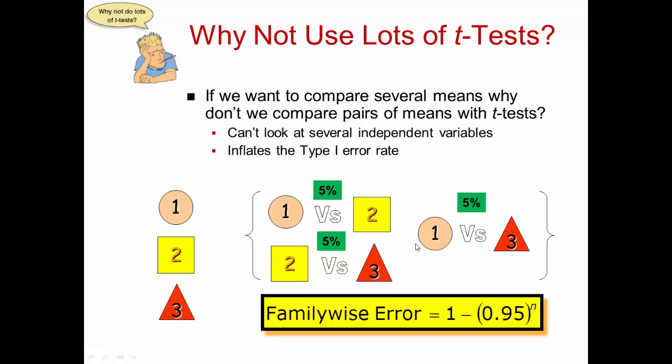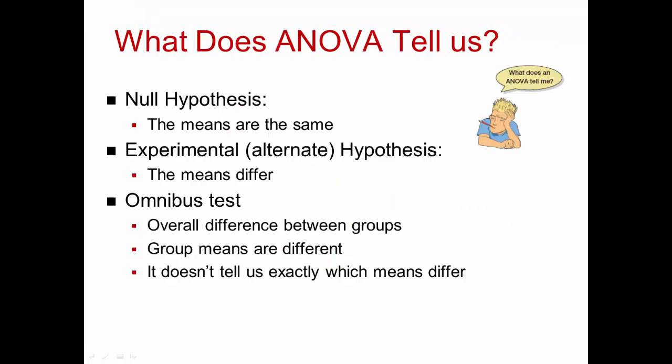So what do we get from ANOVA? Like a t-test, the ANOVA tests the null hypothesis that the means are the same. If you were to use a t-test to compare two means and found them significantly different, then ran an ANOVA with those same groups, you would find those means would also be significantly different. And with the ANOVA, we can do that with even more than two variable groups. Our null hypothesis is that the means are the same, and the alternate hypothesis is that the means differ.